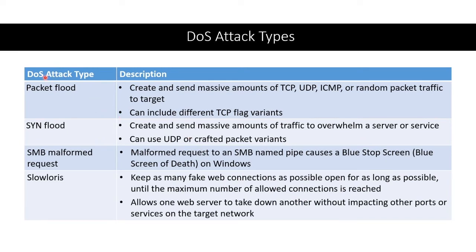We could also send massive amounts of any kind of packets — TCP, UDP, ICMP — with various flags raised, such as a SYN flood or a UDP version of it. We could send malformed SMB requests causing blue screens of death on Windows, where the computer name doesn't match the named pipe. There's also the Slowloris attack: bogus web client connections that go slowly, keeping all connections alive and eating them up so the web server cannot shut them down.